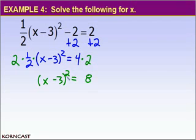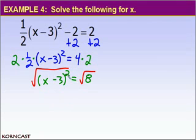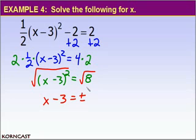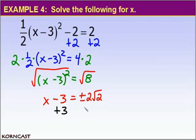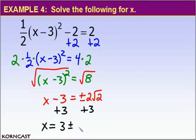Now I take the square root of both sides to undo the squared. The square root of x minus 3 squared gives us x minus 3. Remembering our plus or minus, and that the square root of 8 simplifies to 2 root 2, we have x minus 3 equals plus or minus 2 root 2. Adding 3 to both sides — since 3 and 2 root 2 are unlike terms and cannot be combined — my final answer is x equals 3 plus or minus 2 root 2.